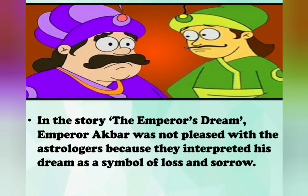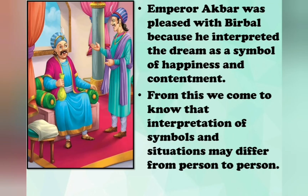The next is the story 'The Emperor's Dream'. In this story, Emperor Akbar was not pleased with the astrologers because they interpreted his dream as a symbol of loss and sorrow. Emperor Akbar was pleased with Birbal because he interpreted the dream as a symbol of happiness and contentment. From this we come to know that interpretation of symbols and